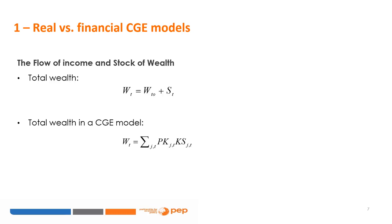There is a missing link between the flow of income and the stock of wealth. The stock of wealth at the end of the period is simply the value at the beginning, W_T0, plus the flow of saving during the period, S_T. However, in a real CGE model, there is no money or other types of financial assets. For a representative household, the only way to increase its wealth is to accumulate real assets in the form of stocks of physical capital invested in production activities.